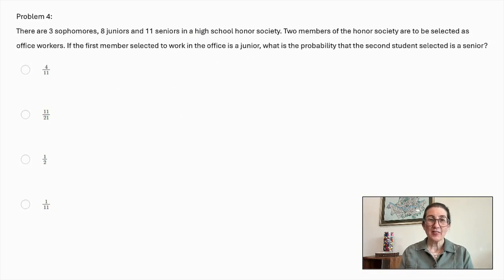Problem number 4. There are 3 sophomores, 8 juniors, and 11 seniors in a high school honor society. 2 members of the honor society are to be selected as office workers. If the first member selected to work in the office is a junior, what is the probability that the second student selected is a senior? 4 out of 11, 11 out of 21, 1 out of 2, or 1 out of 11.